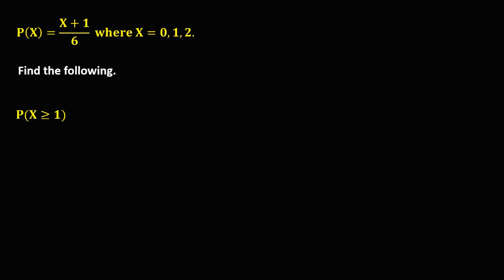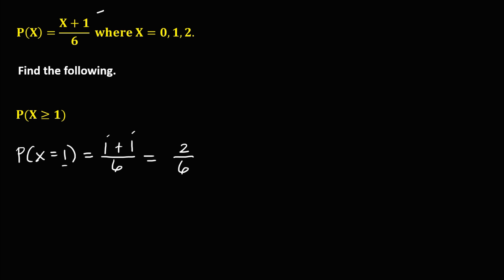For p(x) greater than or equal to 1, since we include equal to 1, start with p(x = 1). From this equation, x is equal to 1, so we have (1 + 1) over 6. Simplifying, 1 plus 1 is 2, giving us 2 over 6. In this case there's no need to reduce this fraction.